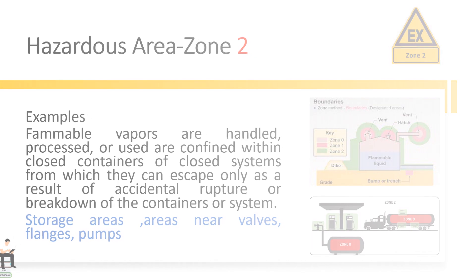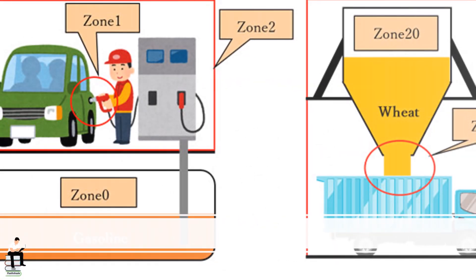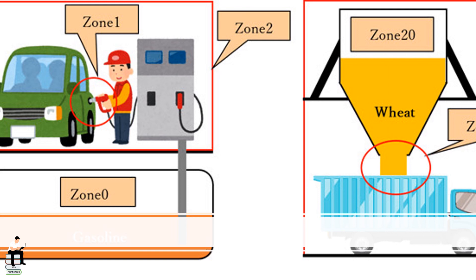Here you can see the zone classification of flammable vapors on the left-hand side and the classification for dust on the right-hand side.